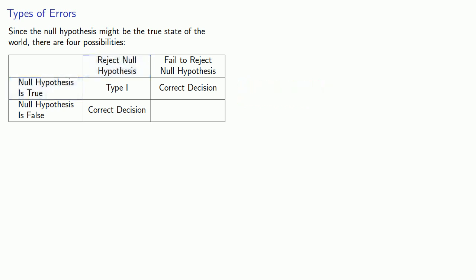Or the null hypothesis is false, and we failed to reject the null hypothesis, and this is what's known as a type 2 error.